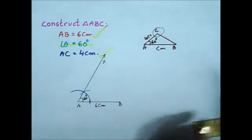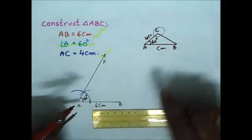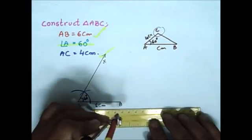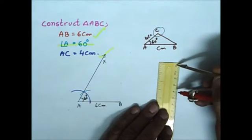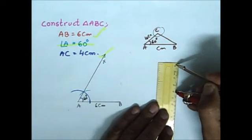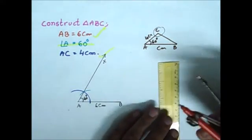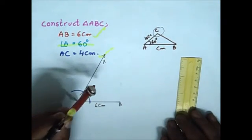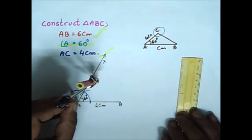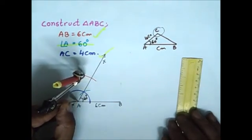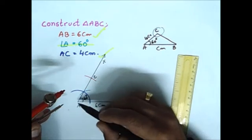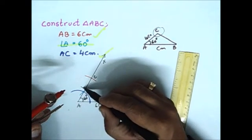So again, now take the radius 4cm with the compass. Yes, 4cm. With center A, draw an arc to cut the ray AX. So this is the point C at a distance of 4cm from A.